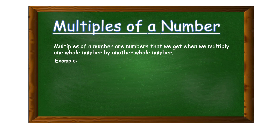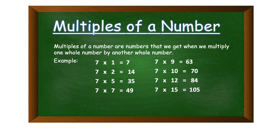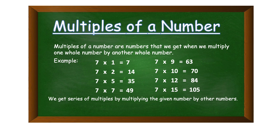Let's look at some examples using the number seven. We have seven times one which is seven, seven times two is fourteen, seven times five is thirty-five, seven times seven is forty-nine, seven times nine is sixty-three, seven times ten is seventy, seven times twelve is eighty-four, and seven times fifteen is one hundred and five.